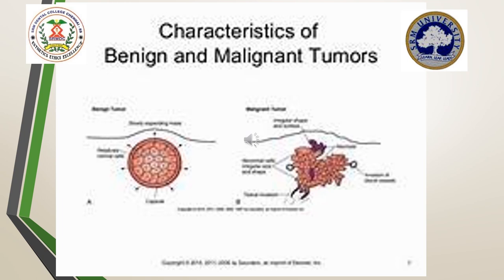The second important criteria regarding gross features is the surrounding tissue. In a benign tumour, the surrounding tissue is often compressed because as the tumour slowly starts growing, it compresses the normal surrounding structures, especially the blood vessels and the normal glands.